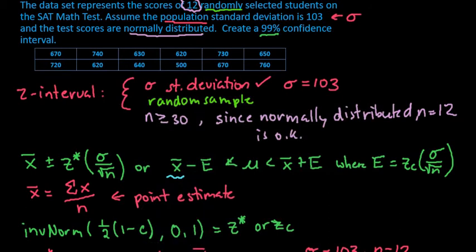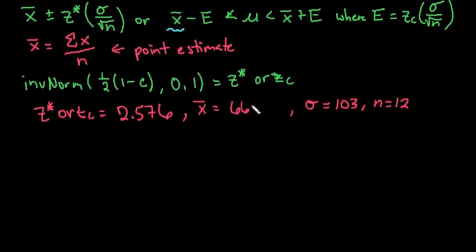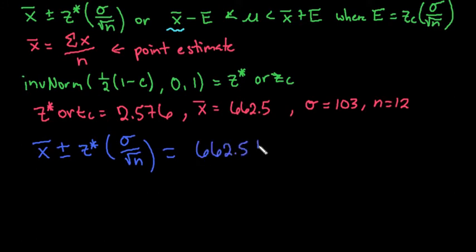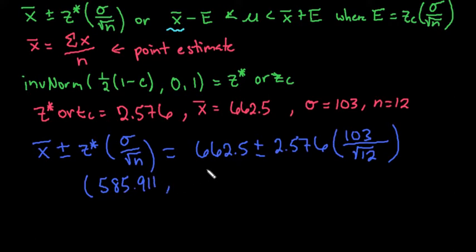I'm going to record all of that information on my screen. So the 662.5 was my mean. If you need to show work, you would just do x-bar plus or minus z-star or z-critical, whichever your textbook uses. Then you would plug in your values. So my x-bar would be 662.5 plus or minus 2.576 times 103 divided by the square root of 12. That ended up giving us our confidence interval of 585.911 to 739.089.